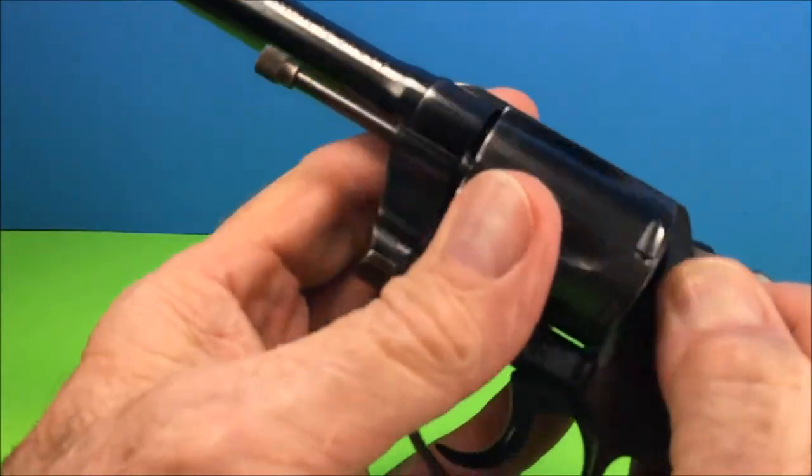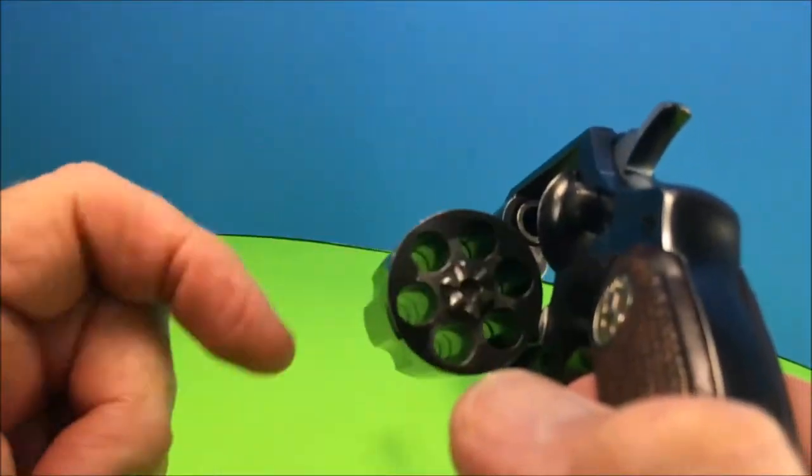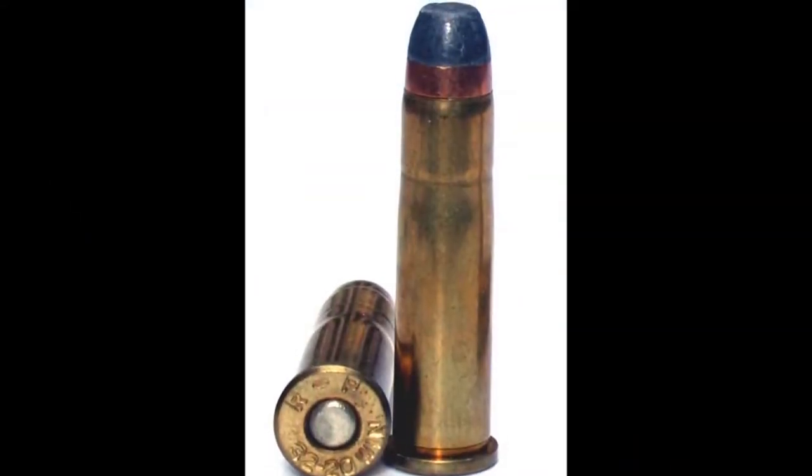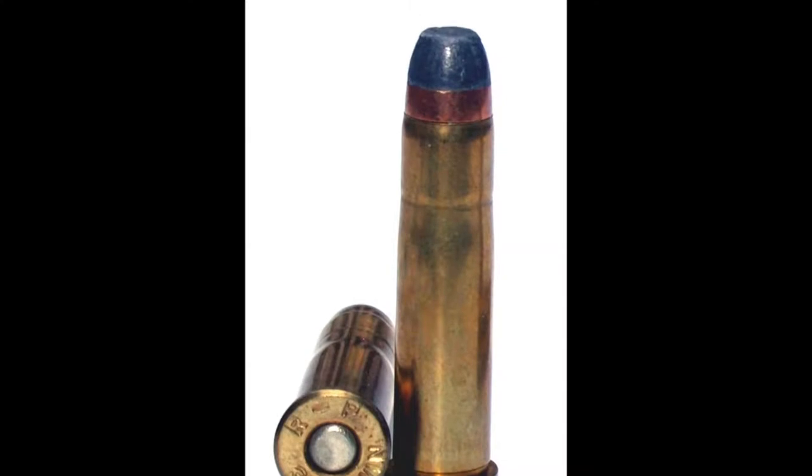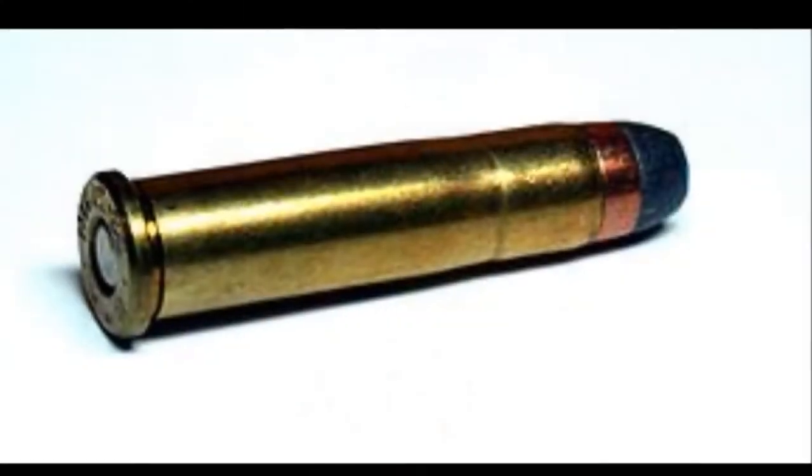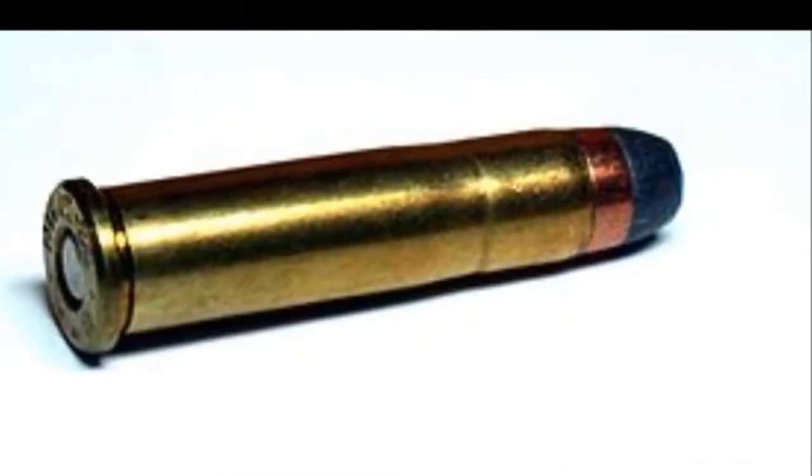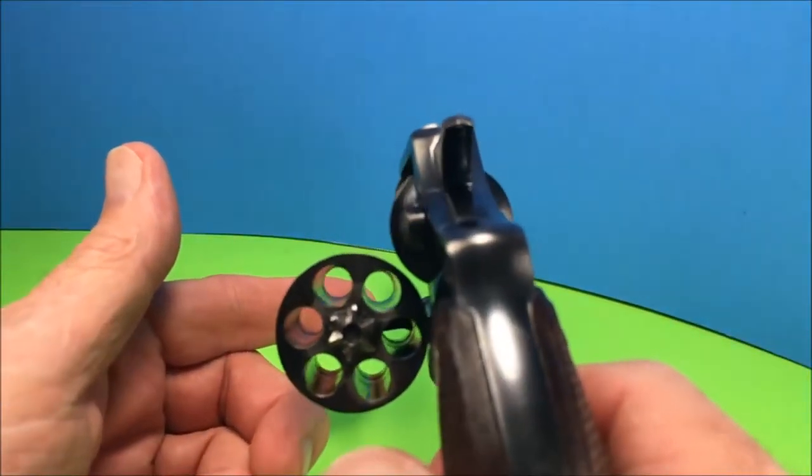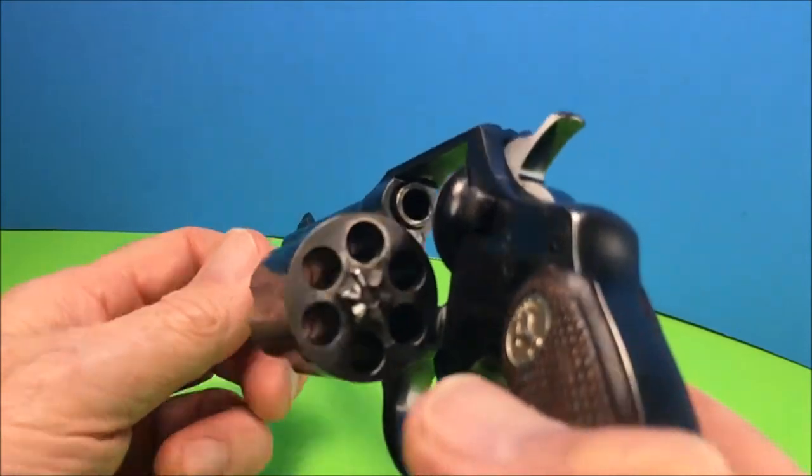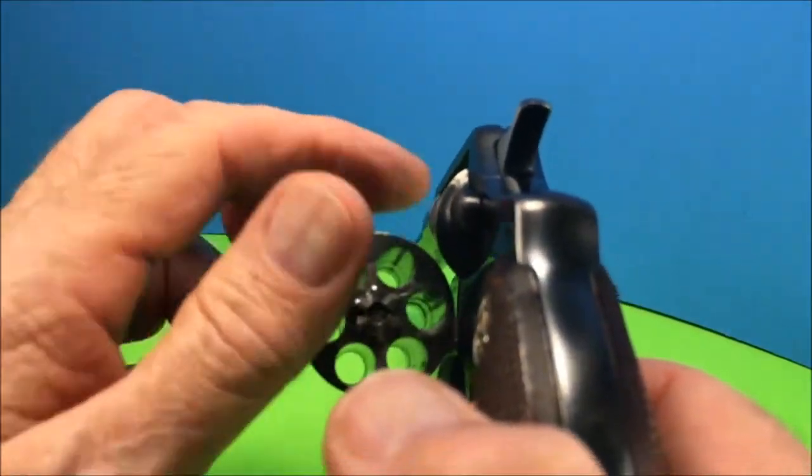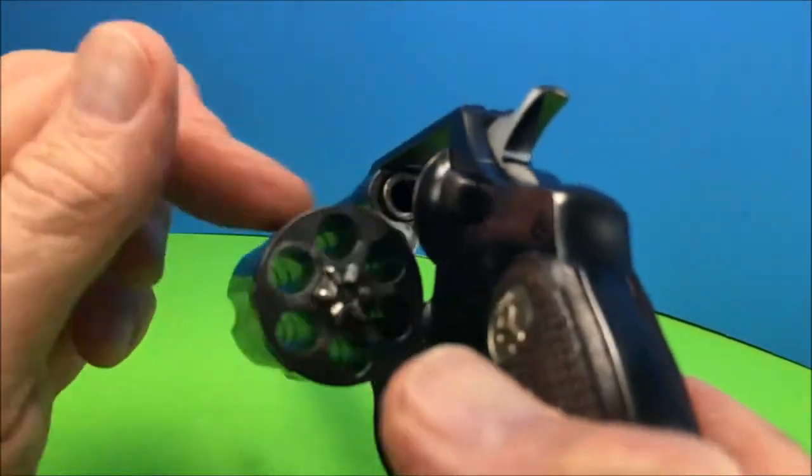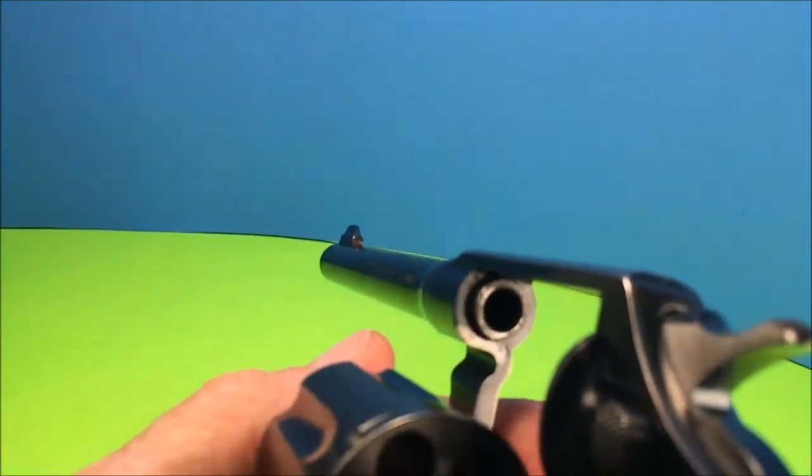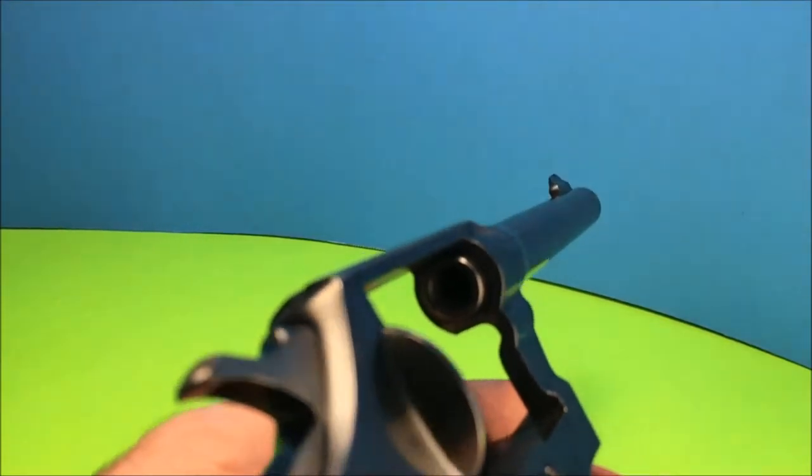I wish I had some of those 32-20 rounds to show you what they look like. I'll show you a picture here. Yeah, they're kind of funky looking, like a Coke bottle. They used to be able to use them in a rifle. It's handy when you could just keep the same round for your rifle and your pistol.